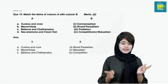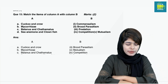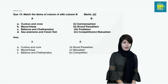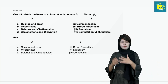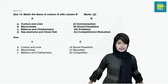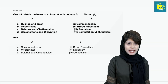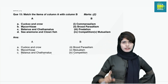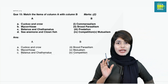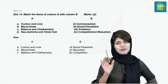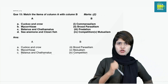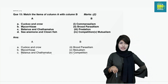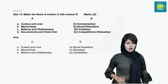Match the items of column A with column B. Cuckoo and crow — brood parasitism. Mycorrhizae — mutualism. Balanus and Chathamalas — competition. Clownfish and sea anemone — commensalism.